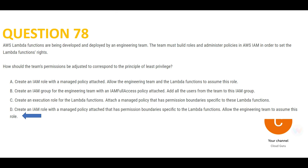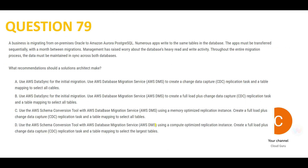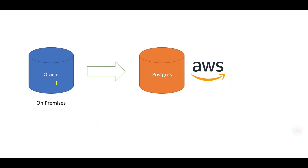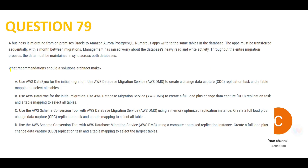Let's look at the next question. It's not very long but the answer options need to be understood clearly. You have an Oracle database on-premises and you want to move it to Postgres on AWS. Looking at the options, they discuss two strategies: one-time migration and incremental migration.